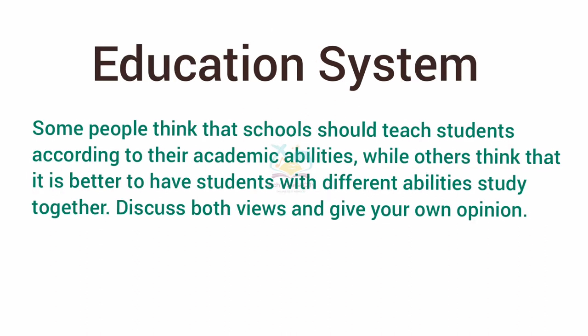Next topic is the education system: 'Some people think that schools should teach students according to their academic abilities, while others think it is better to have students with different abilities study together. Discuss both views and give your own opinion.' Discuss both views and give your opinion on whether students should study together or be differentiated based on academic ability, supporting any point with proper reasons in the third body paragraph.